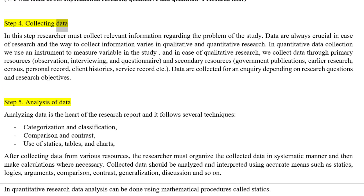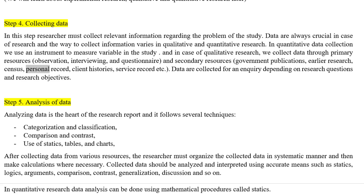Step 4: Collecting data. The researcher must collect relevant information regarding the problem of the study. Data are always crucial in research, and the way to collect information varies in qualitative and quantitative research. In quantitative research, an instrument is used to measure variables. In qualitative research, data are collected through primary resources such as observation, interviewing, and questionnaire, and secondary resources such as government publications, earlier research, census, personal records, client histories, and service records.